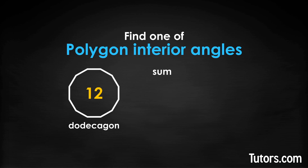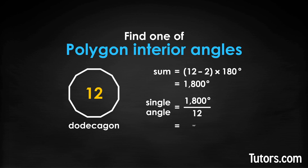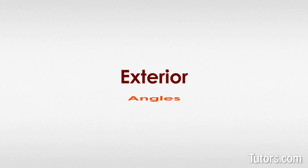Let's find the sum of the interior angles. Start with the formula and plug in: (12 − 2) × 180 degrees. The sum of angles of a dodecagon is 1800 degrees. Now let's find one interior angle — use the same formula but take the extra step and divide by the number of sides n. One interior angle equals 150 degrees.